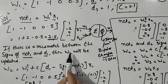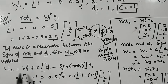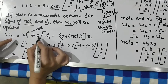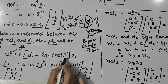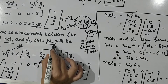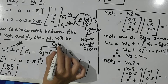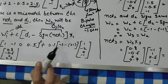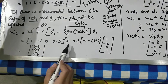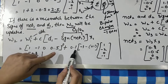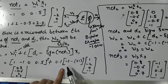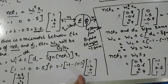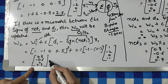Since there is a mismatch between the sign of net1 and d1, we must update the weights. To compute w2, the formula is: w2 = w1 + c * (d1 - sign(net1)) * x1. We take the old weight w1 transpose, the constant c=0.1, then d1=-1 minus the actual output sign(net1)=+1, multiplied by the input x1. Evaluating all these gives us the updated weight vector w2.